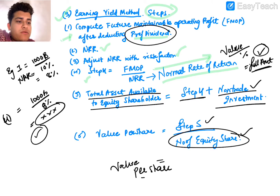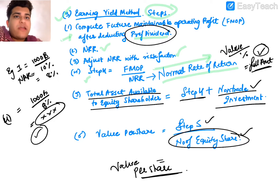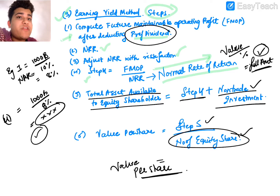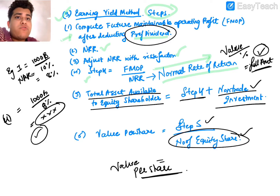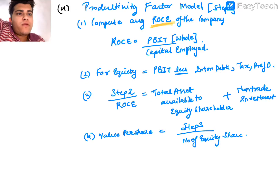To summarize the earning yield method: we find FMoP after deducting preference dividend, divide by the adjusted normal rate of return, add non-traded investment, then divide by number of equity shares to get the exact per-share value.